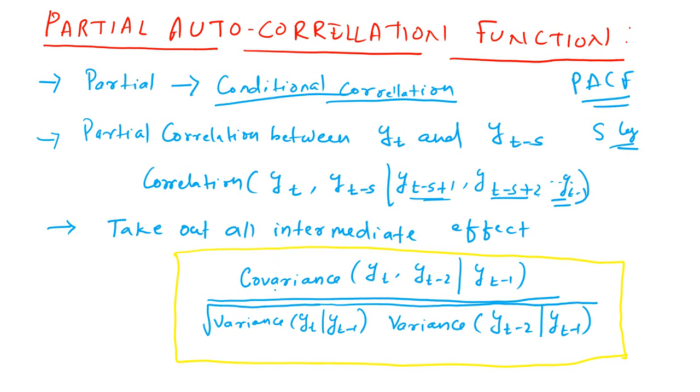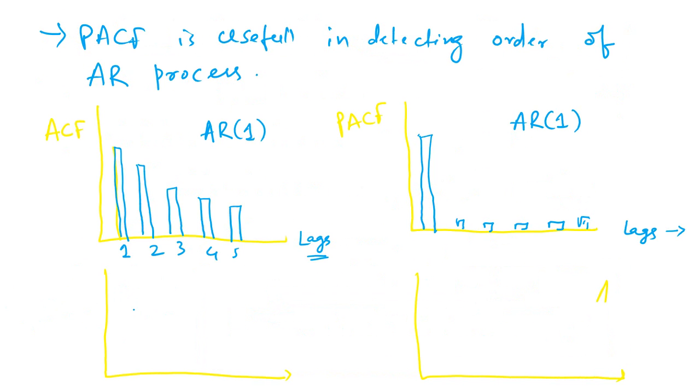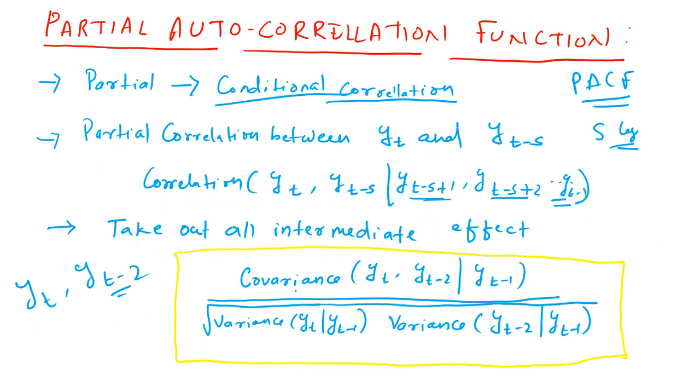So, mathematically we represent like this: covariance of yt, yt minus 2. Let us say we want a PACF between say yt and yt minus 2 or lag 2. So, how do we get it? Covariance of yt, yt minus 2 conditional to yt minus 1. So, this is the intermediate and we are taking this out, we are taking the covariance conditioned to the fact that we have taken out yt minus 1 and then variance of yt given yt minus 1, taking the effect of yt minus 1 and variance of yt minus 2 conditional to yt minus 1.